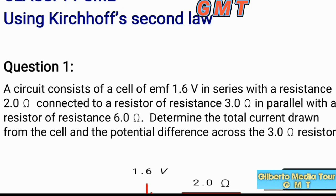A circuit consists of a cell of 1.6 V in series with a resistance of 2 ohms, connected to a resistor of 3 ohms in parallel with a resistor of 6 ohms. Determine the total current drawn from the cell and the potential difference across the 3-ohm resistor.